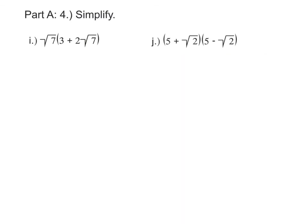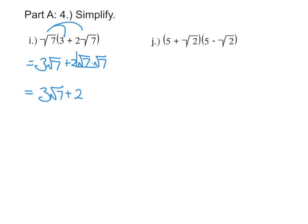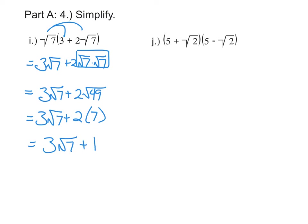For multiplying, we follow the same rules as with polynomials. So if we have the square root of seven times the quantity three plus two root seven, we take the root seven and distribute it. Three gets multiplied by the square root of seven, and two root seven gets multiplied by the square root of seven. Three root seven is already simplified. But root seven times root seven makes root forty-nine, and the square root of forty-nine is seven. So this two gets multiplied by seven, and it simplifies to three square root of seven plus fourteen.